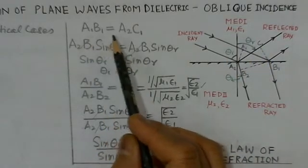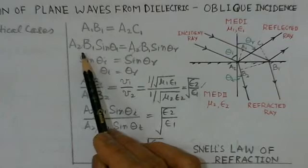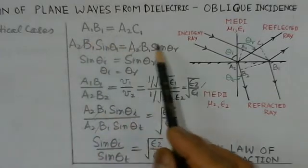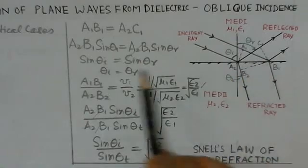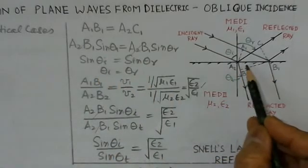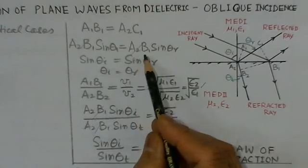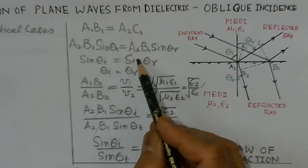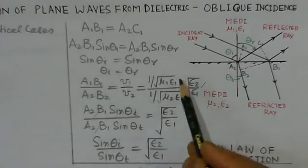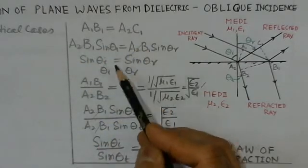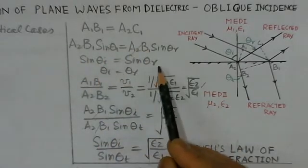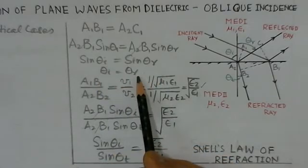So we are equating A1 B1 equals to A2 C1, and I can write the value A1 B1 as A2 B1 sin theta i. This gives us sin theta i equals sin theta r, so theta i equals theta r. That means the angle of incidence is equal to angle of reflection.